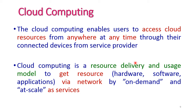Cloud computing is a resource delivery and usage model to get resources via network. The resources may be hardware such as CPU, memory, or network, or any software or applications. The network here is the internet. Resources are provided on demand — meaning if a user requires a resource, they can request it — and at scale, meaning they can demand as much resource as they need, as a service. There are three types of services: free service, subscribe-to service, and paid service.